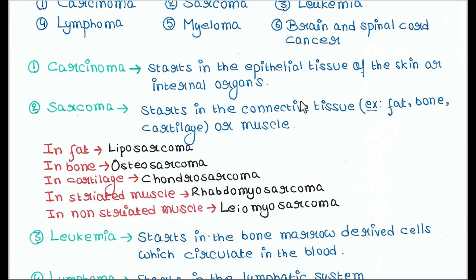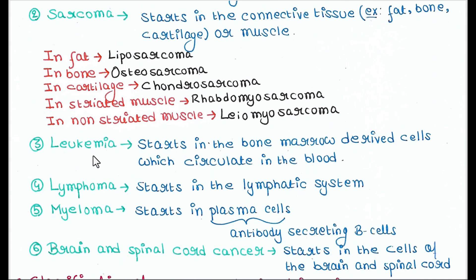Next is sarcoma. It starts in the connective tissues such as fat, bone, cartilage, or muscle tissues. When it occurs in fat tissue we call it liposarcoma. When it occurs in bone we call it osteosarcoma. When it occurs in cartilage we call it chondrosarcoma. When it occurs in striated muscle we call it leiomyosarcoma.